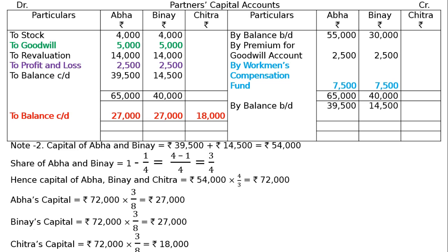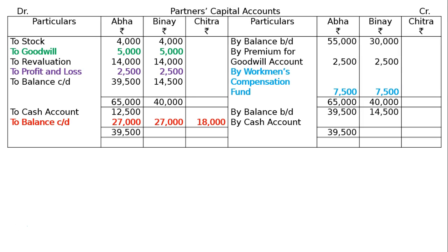The difference is settled by cash. For Abha: Rs. 39,500 is the higher figure on the credit side, so Abha withdraws the difference of Rs. 12,500 in cash. For Vinay: the required capital of Rs. 27,000 on the credit side is higher, so Vinay brings in Rs. 12,500 in cash (Rs. 27,000 minus Rs. 14,500). Chitra also brings in her capital of Rs. 18,000 by cash account. This is the final answer.